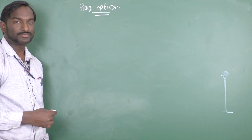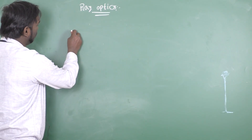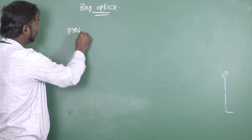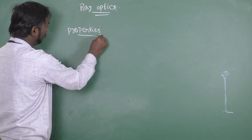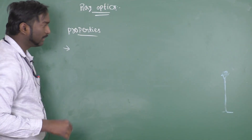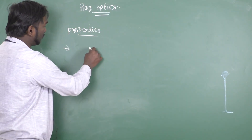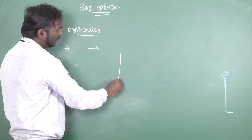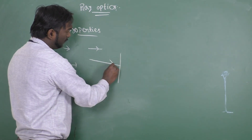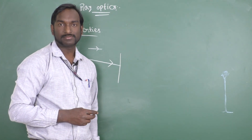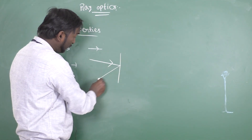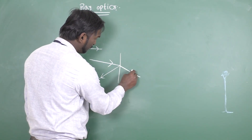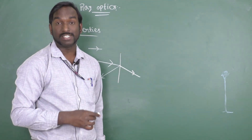Ray Optics. First you should know the properties of light. Light always travels in a straight line. When light strikes on any surface, it may reflect, or it may refract, or it will diffract.